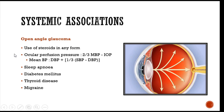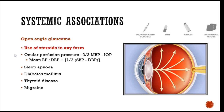The most important systemic association with open angle glaucoma is the use of steroids. Topical steroids are most commonly the reason, but any type of steroid can cause glaucoma. Topical steroids have quicker access to the trabecular meshwork, while systemic steroids initially cause cataract and later glaucoma. Even creams, transdermal patches, and inhalers can raise intraocular pressure. Any patient on steroids for 4 to 6 weeks should have their intraocular pressure checked.